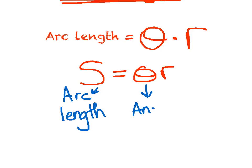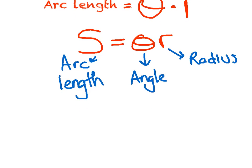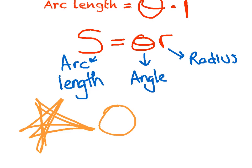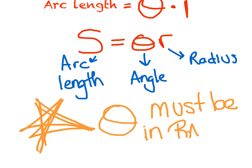S is your arc length, theta is your angle, and r is your radius — those are the only things we need. SOAR: s equals theta r, the arc length formula. The most important thing about this formula — highlight it big in your notebook — theta in this formula must be in radians. If it's not, you'll have to convert it.